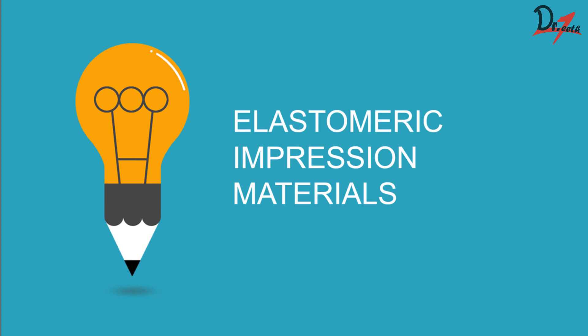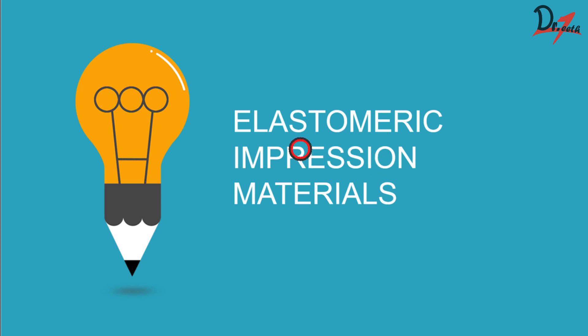Hello everyone, assalamualaikum. Today's topic is on elastomeric impression materials, so this is going to be an introductory video on what elastomeric materials are, their classification, and general things about them. The term 'elastomeric' is derived from the word elastic, so these materials have elastic properties — they are rubbery substances. Originally, this material was used for industrial purposes like making tires.